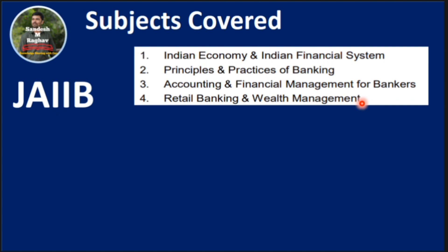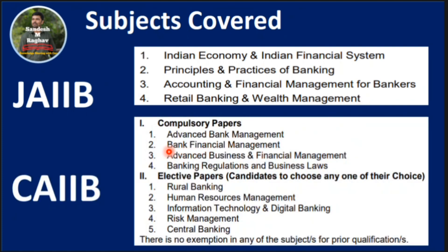For CAIIB, you will attend four compulsory papers: Advanced Bank Management, Bank Financial Management, Advanced Business and Financial Management, and Banking Regulation and Business Laws. Additionally, you must select one optional subject out of five: Rural Banking, Human Resource Management, Information Technology and Digital Banking, Risk Management, or Central Banking.